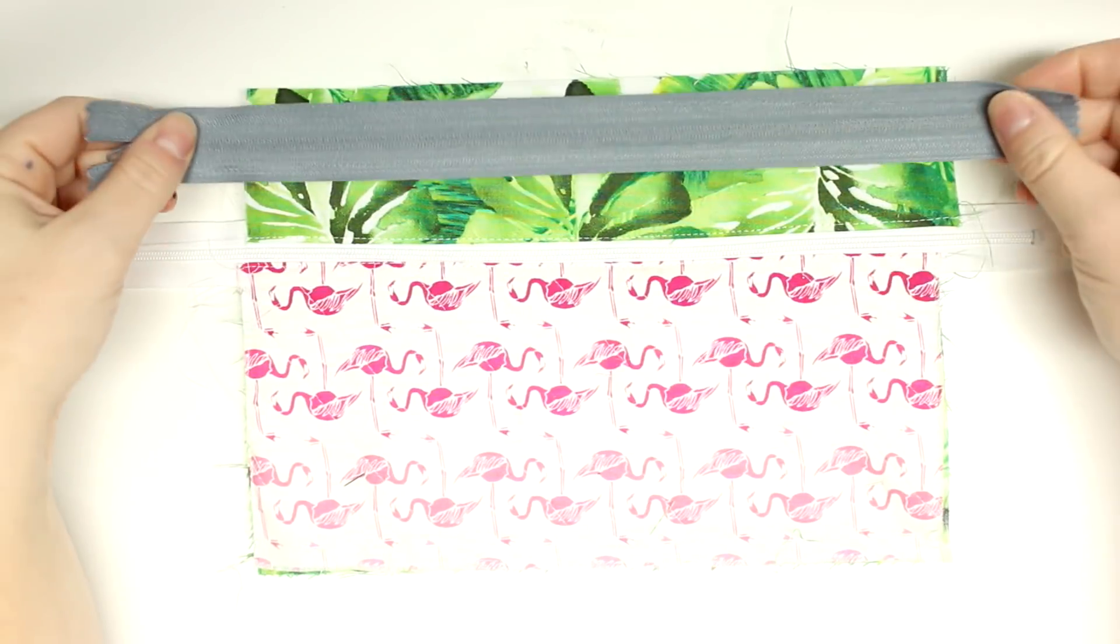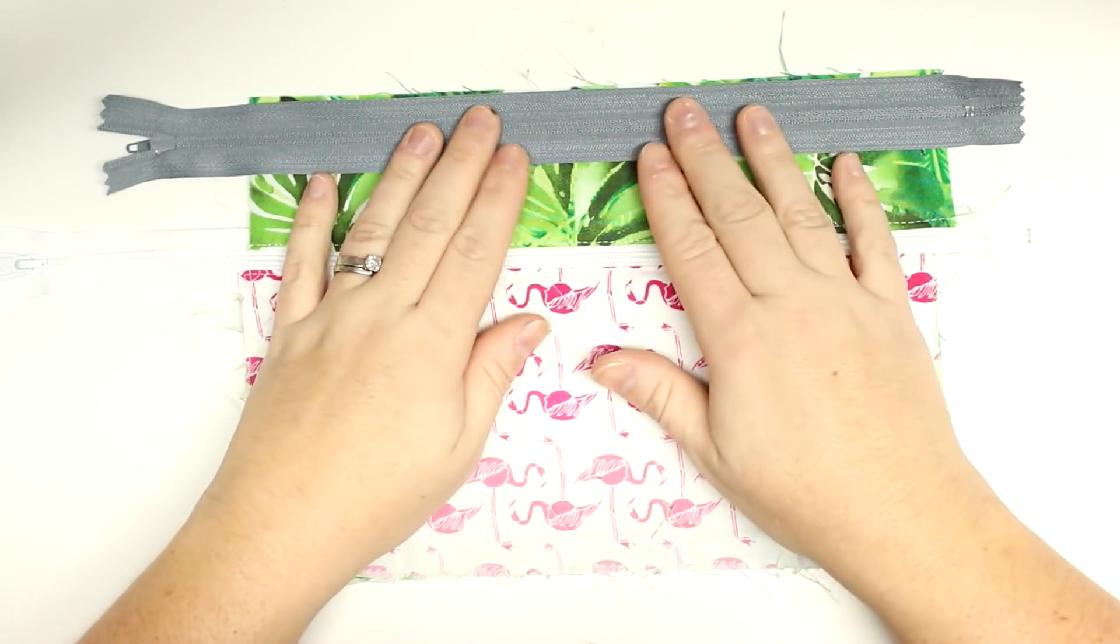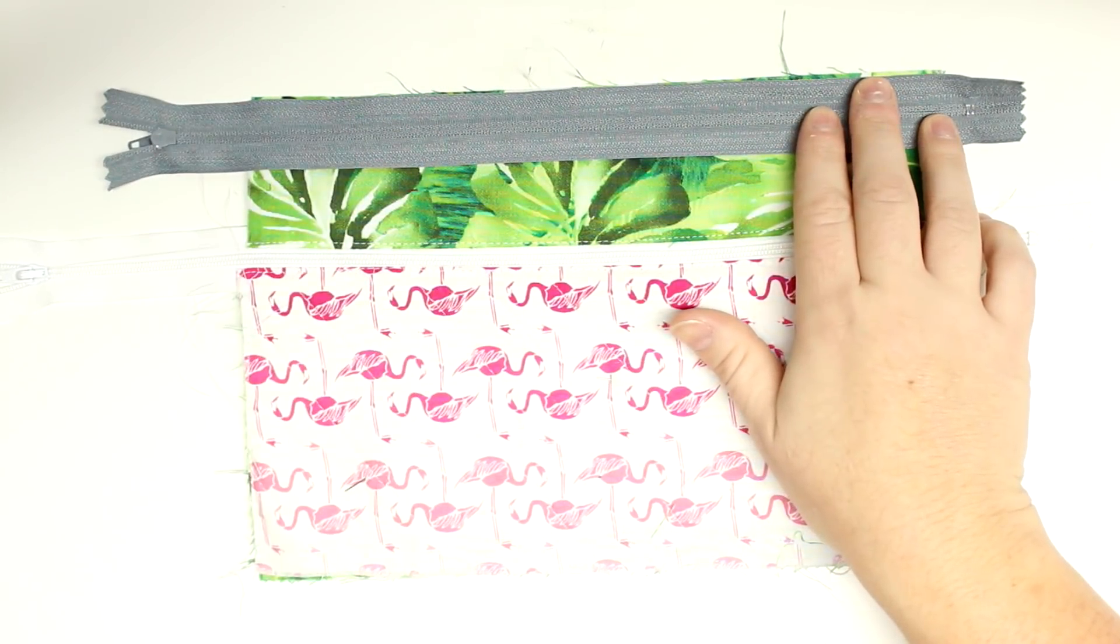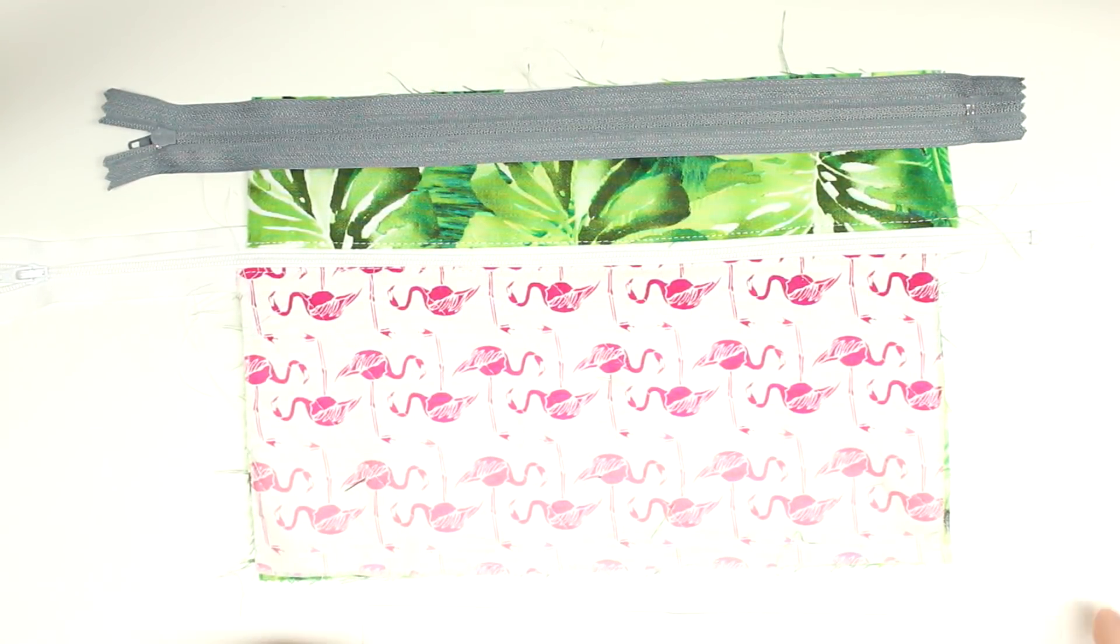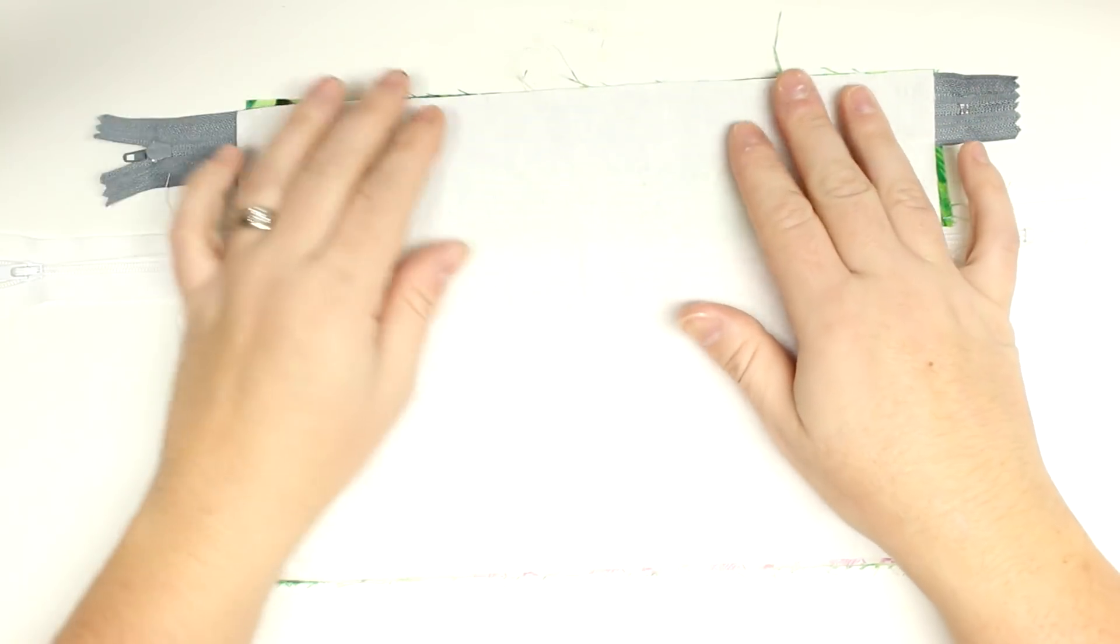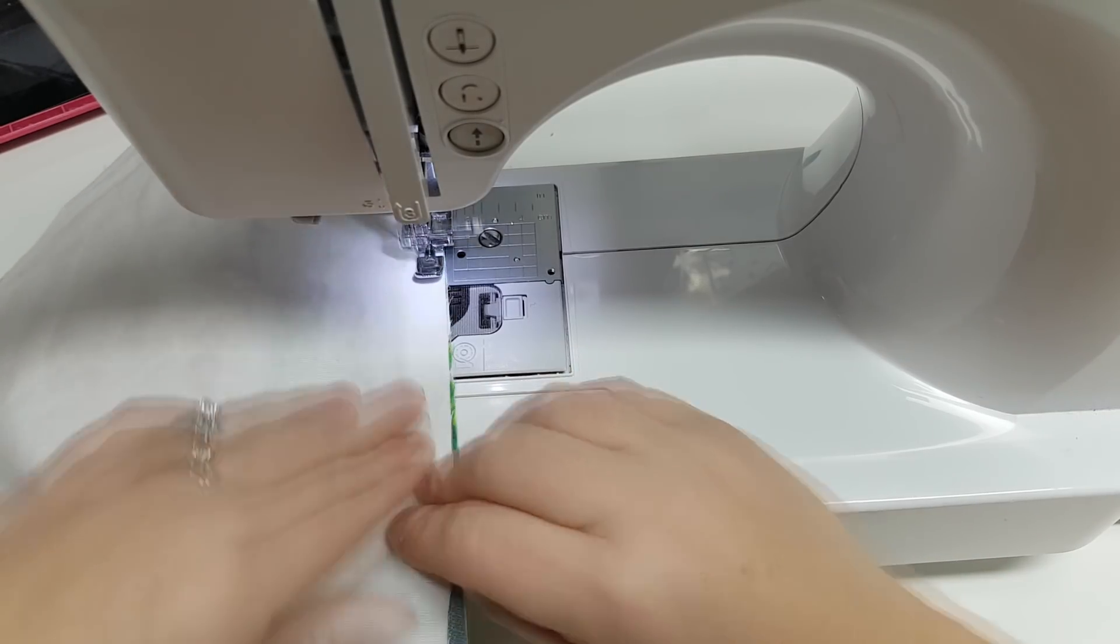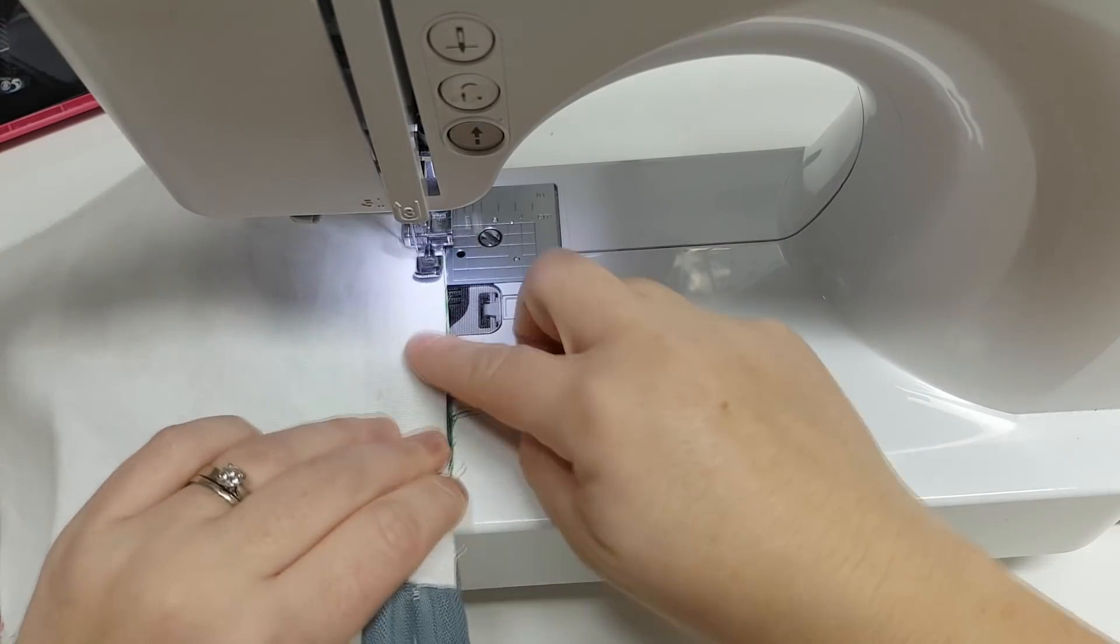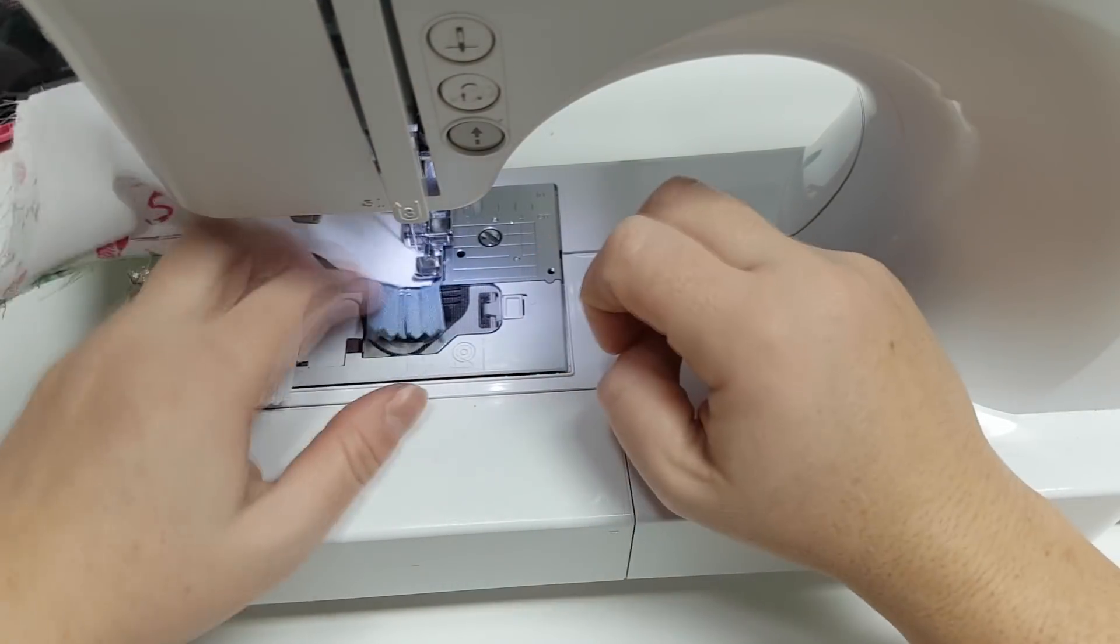Now we're going to work on doing the top zipper. So just like before, we're going to put the zipper pull down on top and then sandwich it with our lining. This is my flannel lining and then I'm going to again sew in nice and close to the zipper teeth.